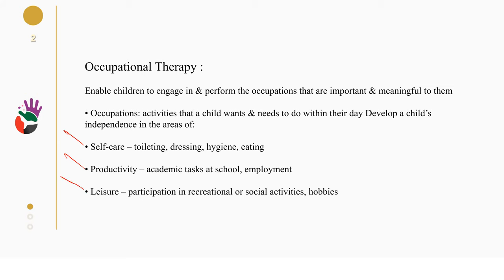When we talk about self-care, it's about activities like dressing, hygiene, and eating. Productivity includes academic tasks at school and employment — for example, if the child with Down syndrome is at school, I want them to be independent, like taking a book from their bag. If it's employment, such as a work placement in a hotel, how they prepare the bed. Leisure includes participation in recreational or social activities or hobbies in general.